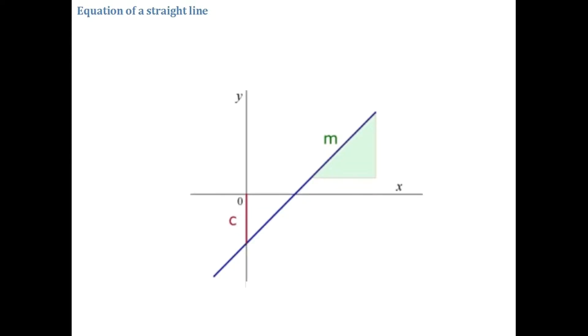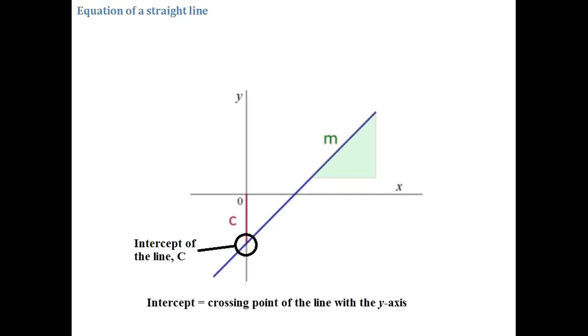Hi there. In this video I'm going to go through the equation of a straight line. I have a diagram over here showing a straight line. C is regarded as the intercept — intercept means the point where the line crosses the y-axis. So C is the intercept of the line.